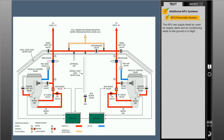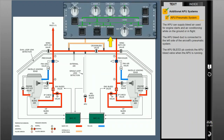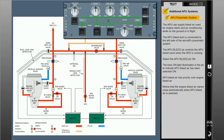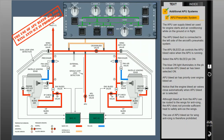The APU can supply bleed air used for engine starts and air conditioning while on the ground or in flight. The APU bleed duct is connected to the left side of the aircraft's pneumatic system. The APU bleed push button controls the APU bleed valve when the APU is running. Select the APU bleed push button on. APU bleed air has priority over engine bleed air. Notice that the engine bleed air valves close automatically when APU bleed air is selected. Although bleed air from the APU can be routed to the wings for anti-icing, the APU does not provide sufficient heat to safely anti-ice the wings. The use of APU bleed air for wing anti-icing is therefore prohibited.